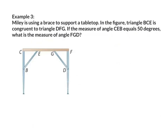Example number 3: Miley is using a brace to support a tabletop. In the figure, triangle BCE is congruent to triangle DFG. If the measure of angle CEB equals 50 degrees, what is the measure of angle FGD? They said angle CEB equals 50 degrees. Since they've been reflected and are congruent, angle FGD also equals 50 degrees.